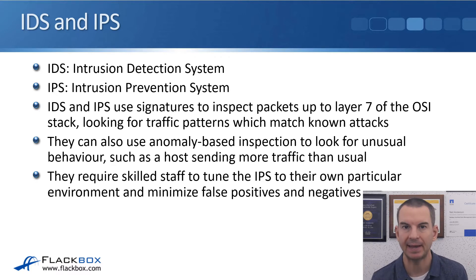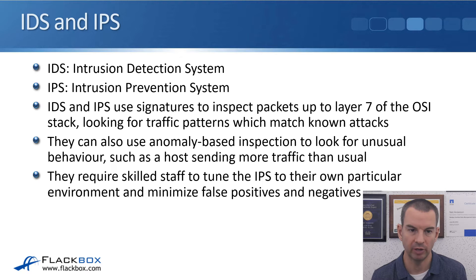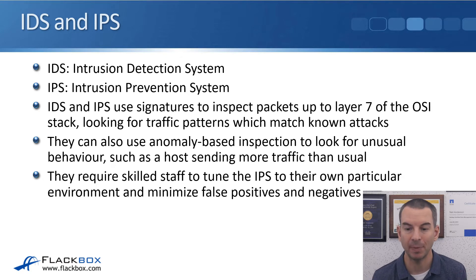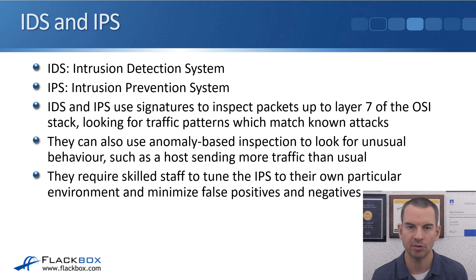IDS stands for intrusion detection system and IPS is an intrusion prevention system. The IDS or IPS uses signatures to inspect packets up to layer 7 of the OSI stack, looking for traffic patterns which match known attacks. They can also use anomaly-based inspection to look for unusual behavior, such as a host sending a lot more traffic than usual, which would indicate it has been infected by a worm. IDS and IPS are quite similar to antivirus software in that they use signatures to look for known attacks.